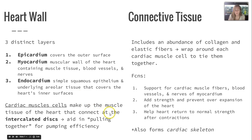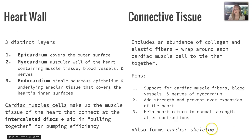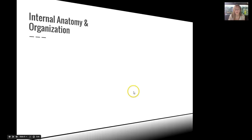Cardiac muscle cells make up the muscle tissue of the heart and connect at intercalated discs, which aid in pulling together for pumping efficiency. The connective tissue of the heart includes collagen and elastic fibers that wrap around each cardiac muscle cell, supporting muscle fibers, blood vessels, and nerves. They prevent over-expansion, help the heart return to normal shape after contraction, and form the cardiac skeleton.